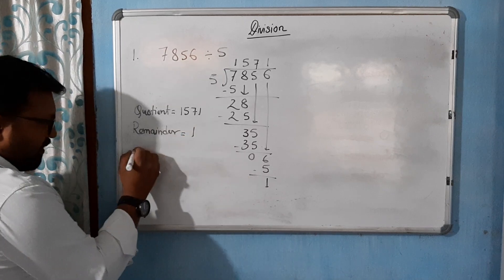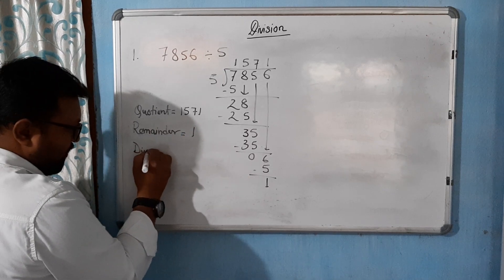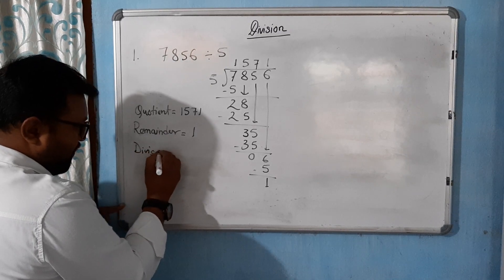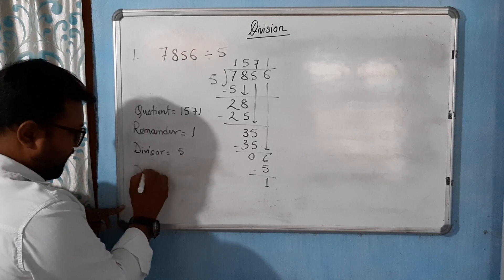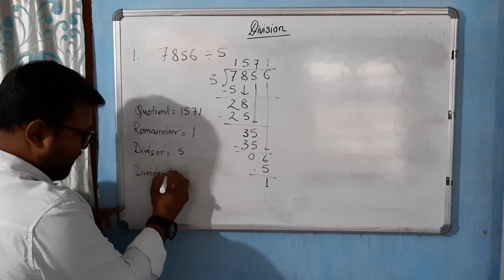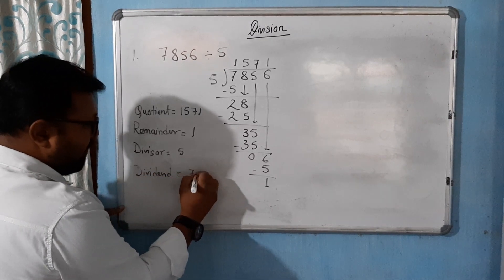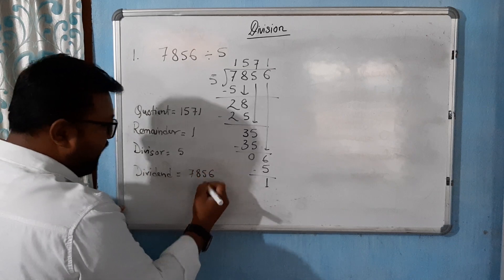1. Our divisor is 5, and dividend is 7856. Is that clear?